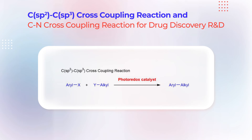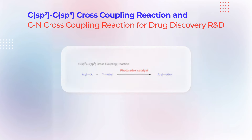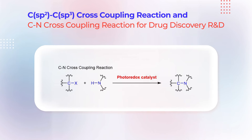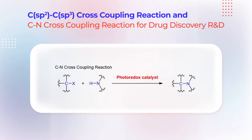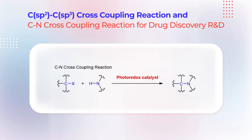Photoredox catalysts are often used in C(sp2)–C(sp3) cross-coupling reactions and C–N cross-coupling reactions for drug discovery, research, and development.